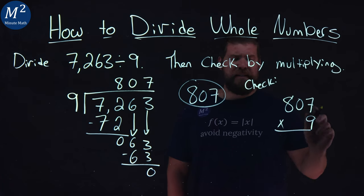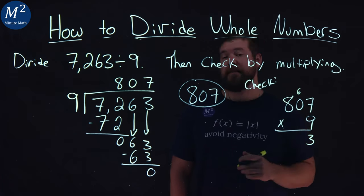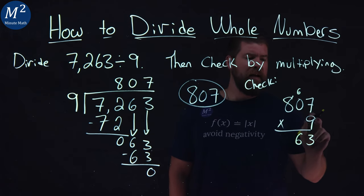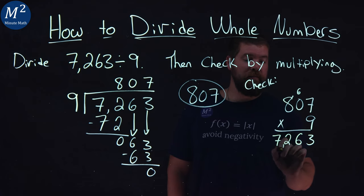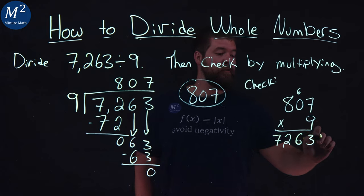9 times 7 is 63. 3 down here, carry the 6. 9 times 0 is, well, 0 plus 6 is 6 and 9 times 8 is 72. And we got it. 7,263 right there. Our check works out.